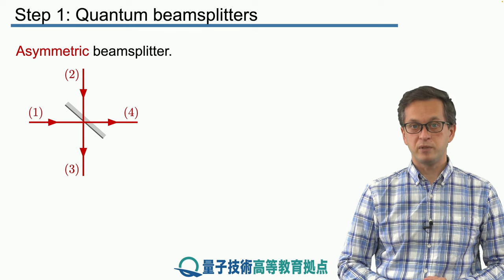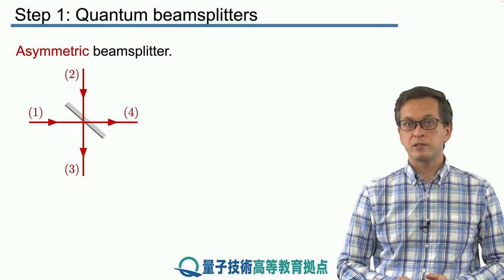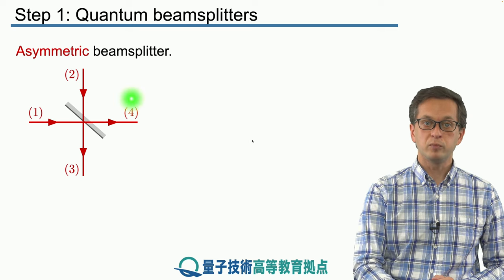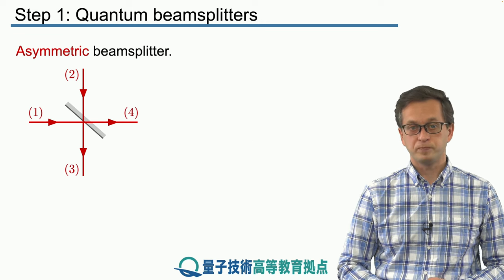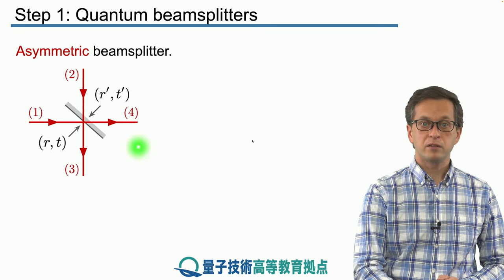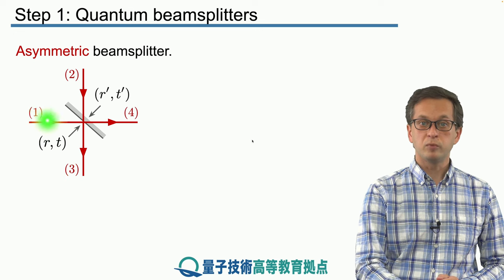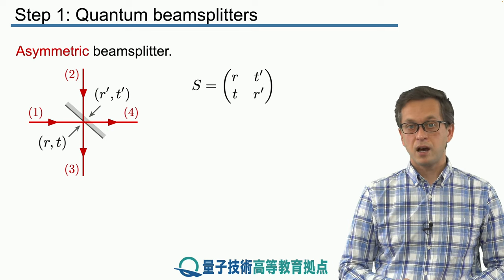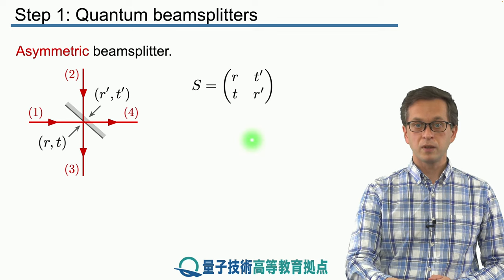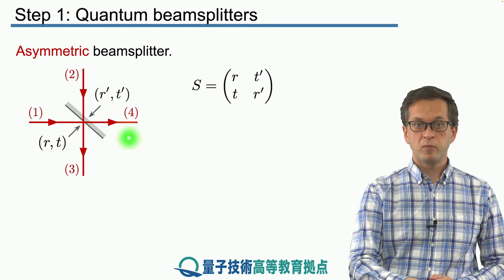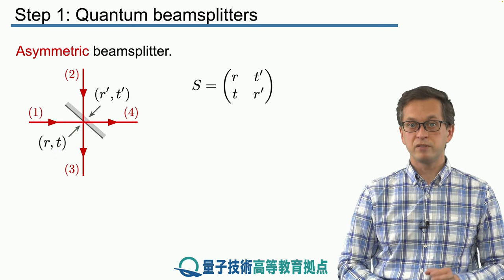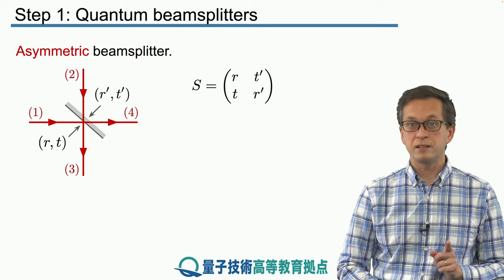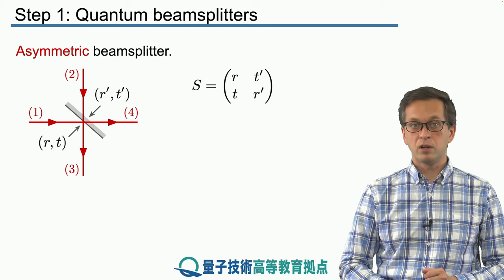Now let's cover asymmetric beam splitters. So far we have only talked about symmetric beam splitters where the reflection and transmission probabilities are equal for input mode 1 and input mode 2, but that doesn't need to be true. In particular, we can have different coefficients r and t for input mode 1, and different coefficients r-prime and t-prime for input mode 2. In such a case our beam splitter matrix takes a more general form, where the probability amplitude of A1 being reflected is r, and the probability amplitude of mode 2 being transmitted is t-prime.